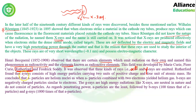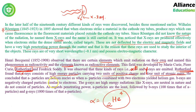Rutherford found that alpha rays consist of high energy particles carrying two units of positive charge and a mass of four atomic mass units — that is why they are called the nucleus of helium (alpha particle). Your homework from this slide is to write the difference between alpha, beta, and gamma rays — you will find the difference in the last paragraph of this slide.